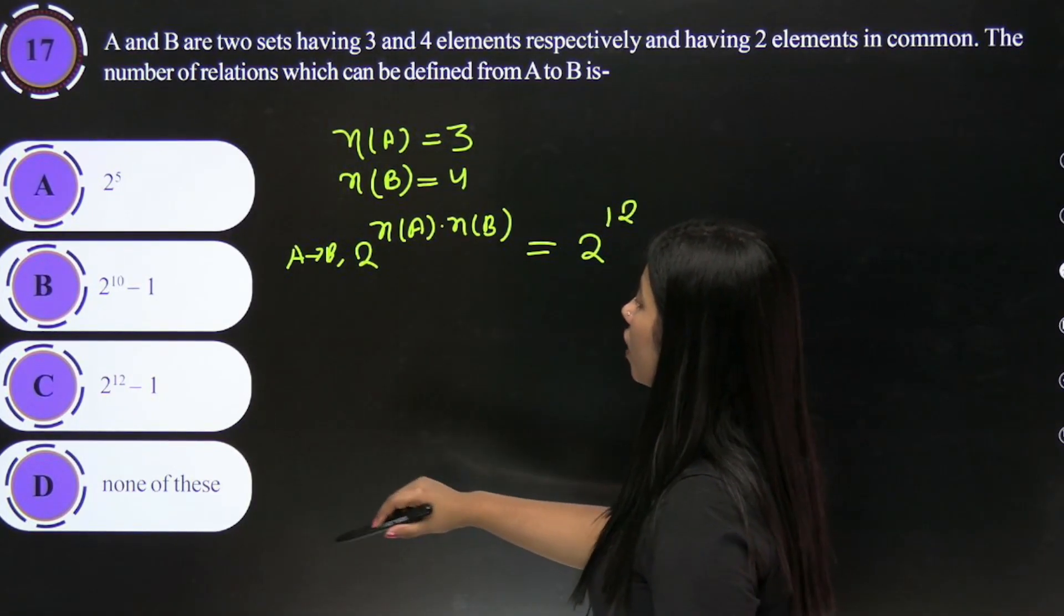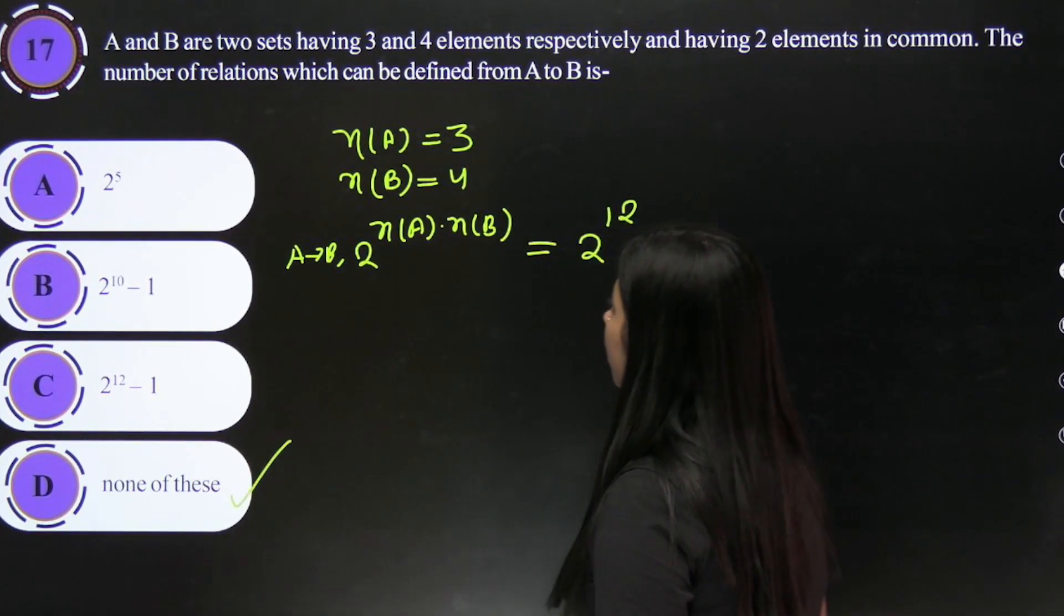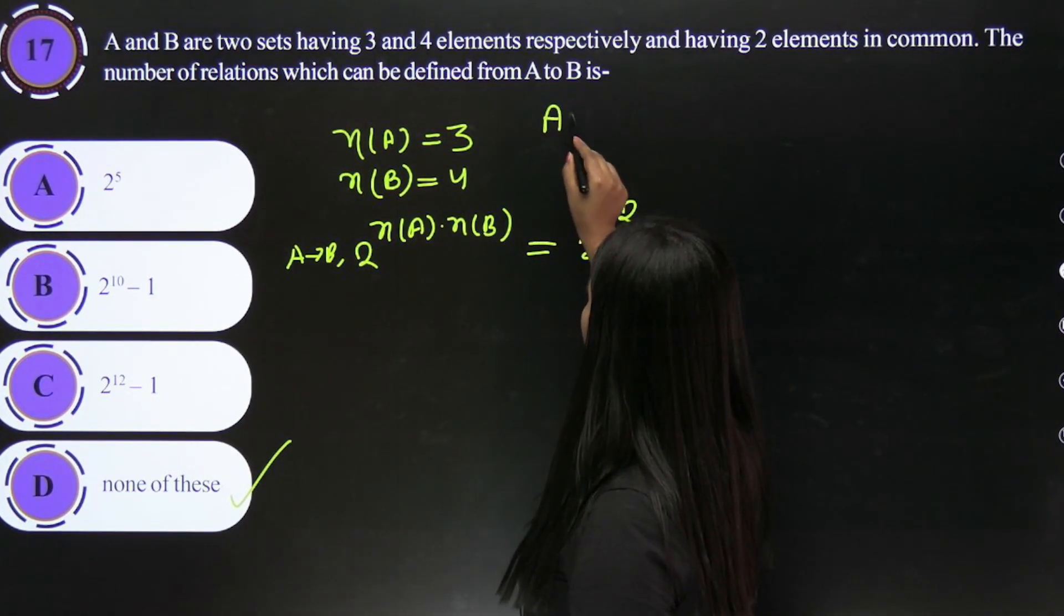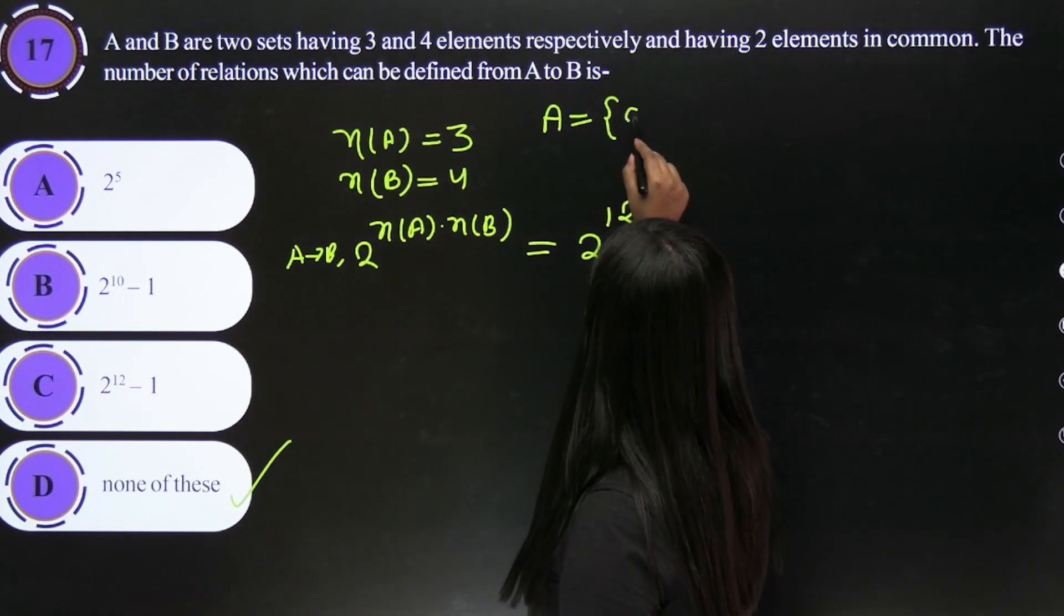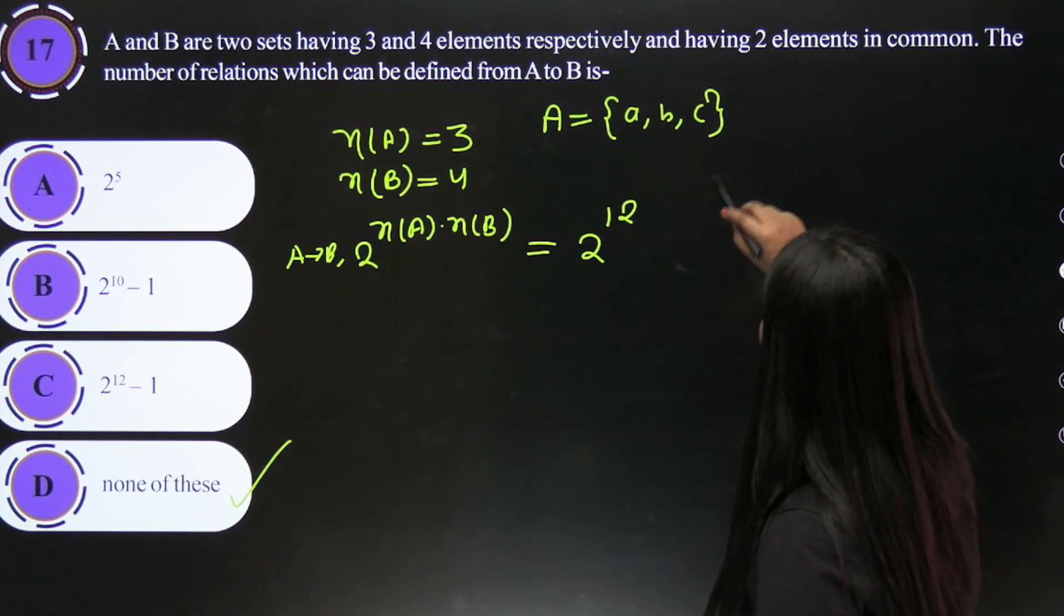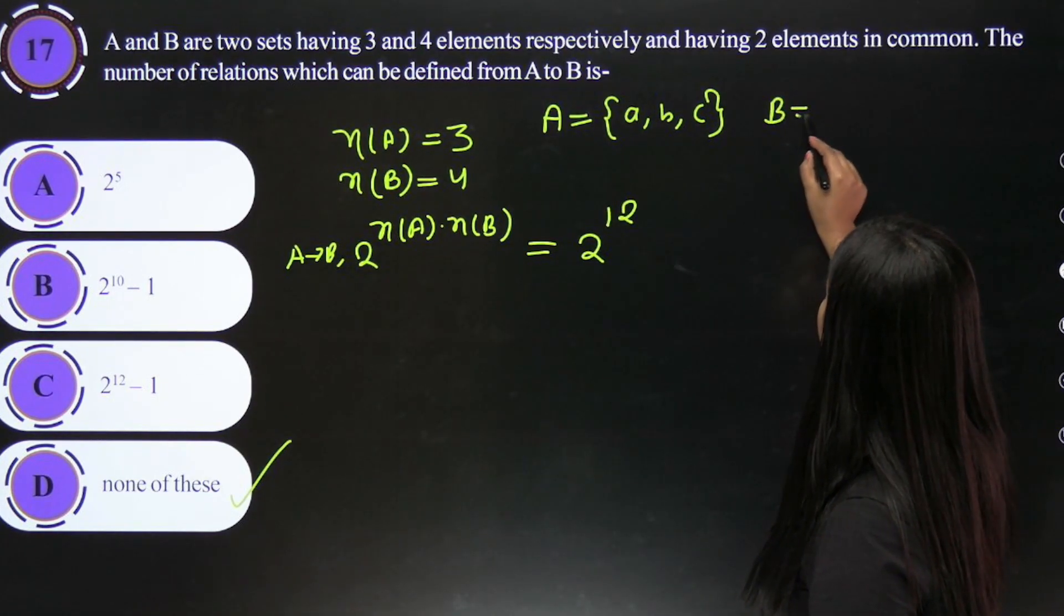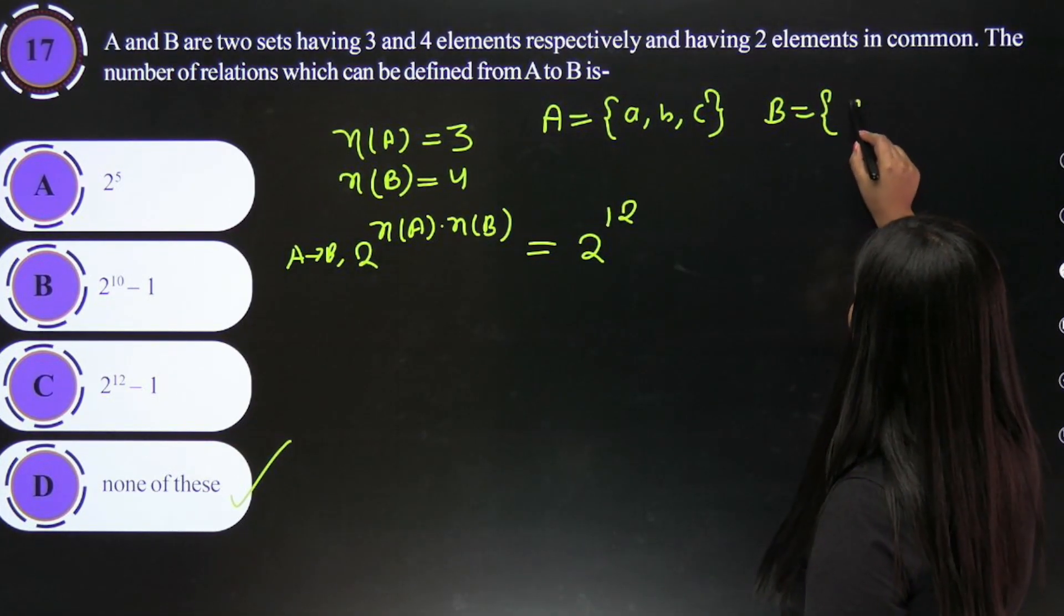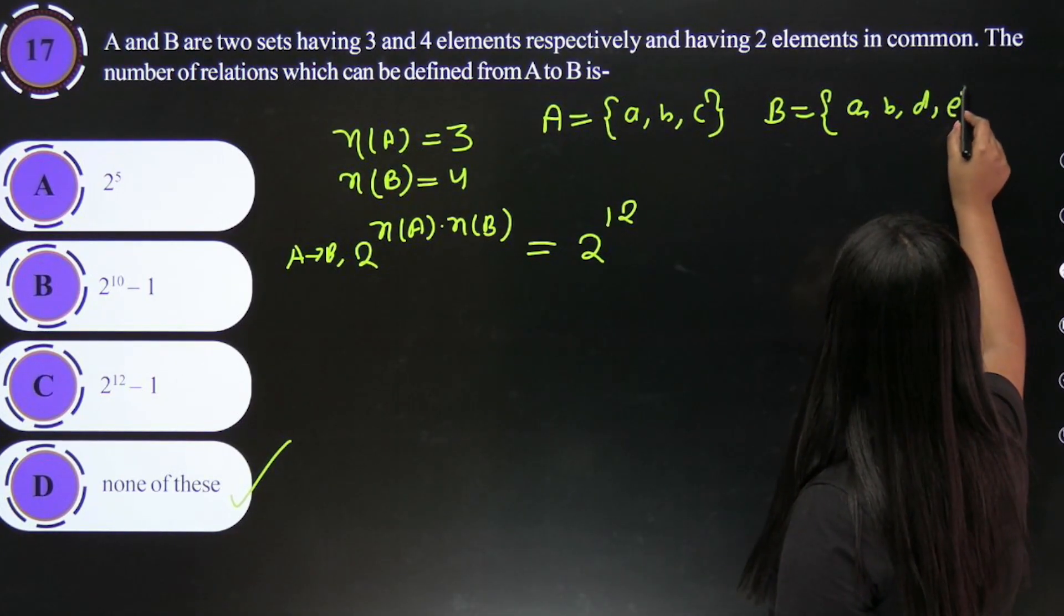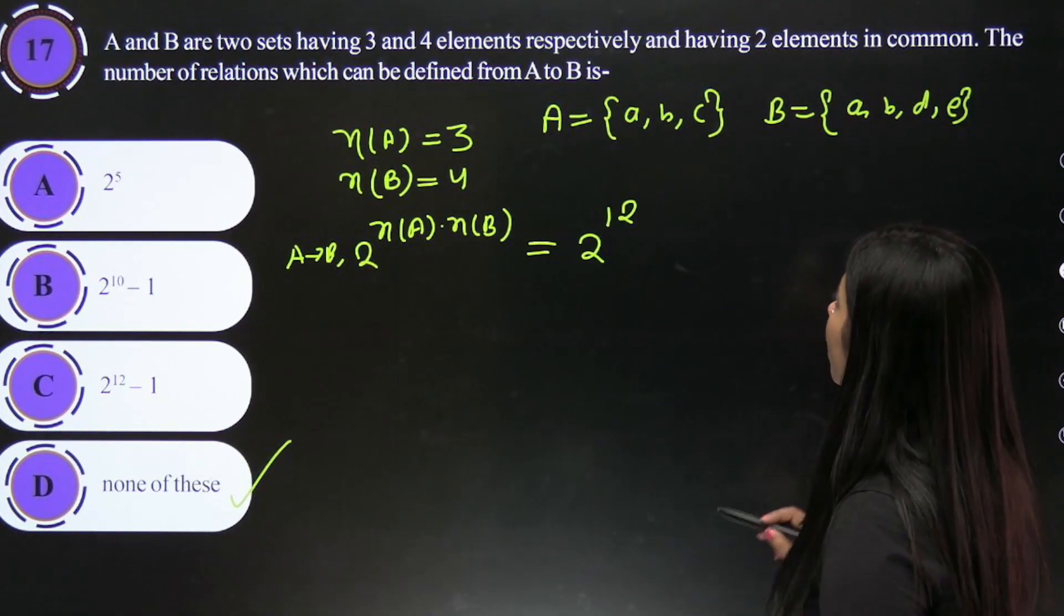So option A is not there, so it will be none of these. You can also see this another way. If we take set elements like: A = {a, b, c} and set B, we take A = {a, b, d, e}, since 2 elements are common as the question states.